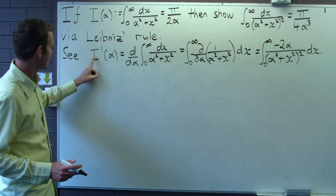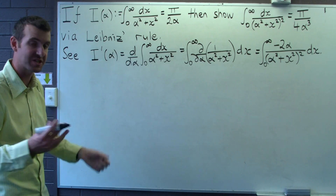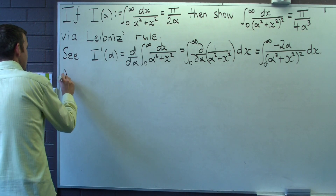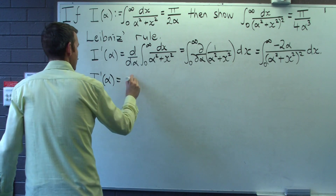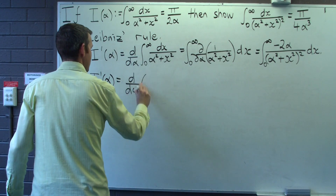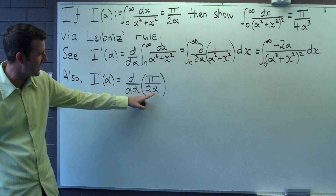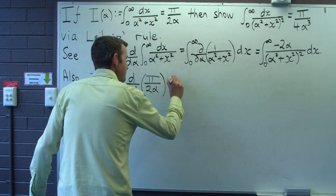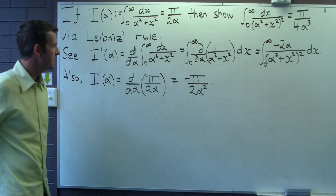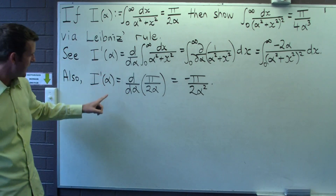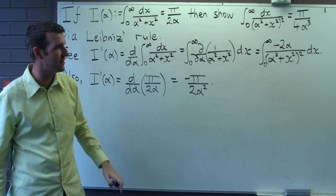How do we make it match? Let's calculate I'(α) from the known result π/(2α) and then compare the two representations of I'. Differentiating π/(2α) with respect to α gives -π on the top and 2α² on the bottom. Comparing these two representations of I', it means that this integral must equal -π/(2α²).